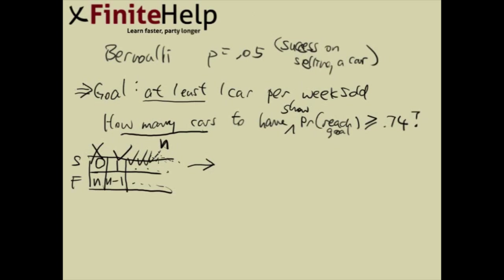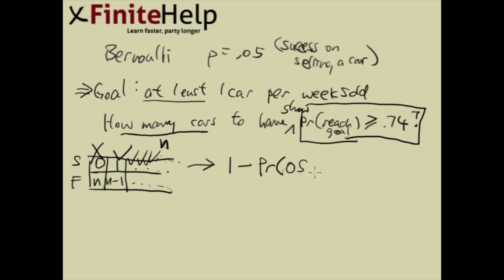So here we come to the formula. The probability of reaching the goal greater than 0.74 is going to look like this: 1 minus the probability of selling no cars. Selling no cars means zero successes and N failures. The probability of reaching the goal — which is selling at least one car — equals 1 minus the probability of selling no cars, and we want that to be greater than 0.74.